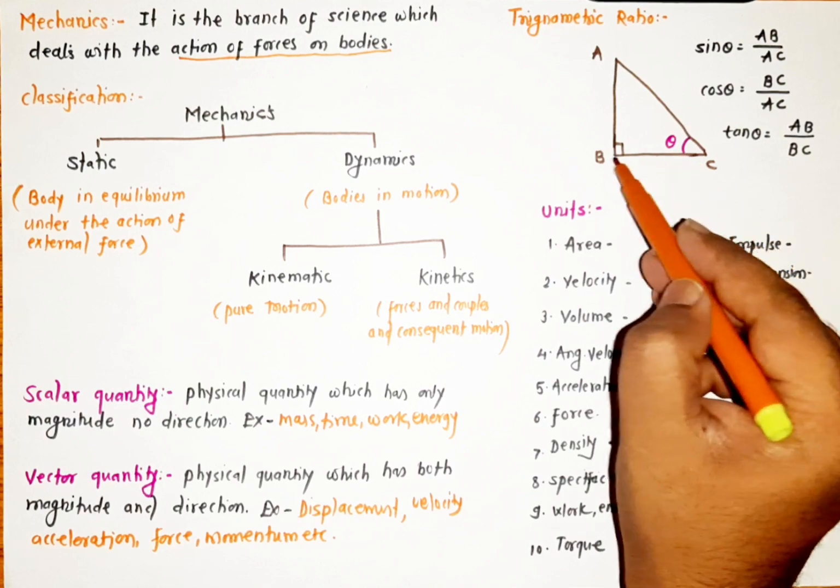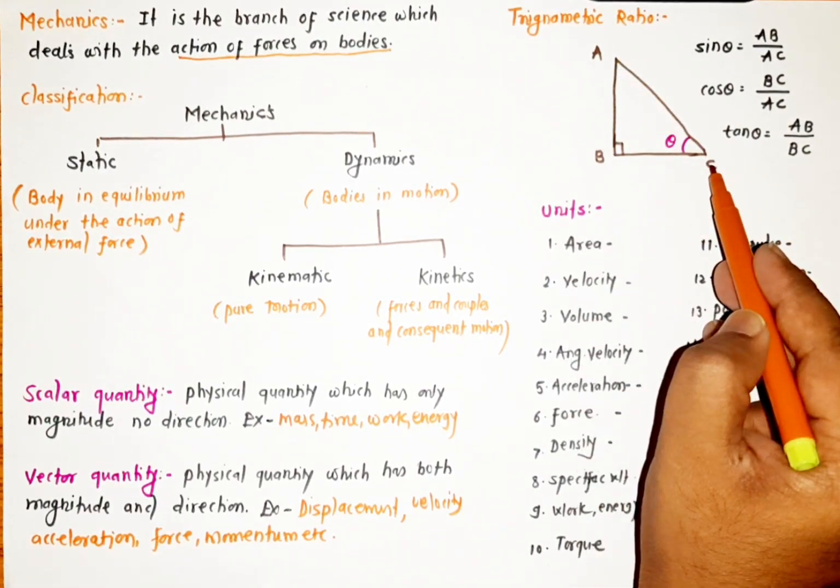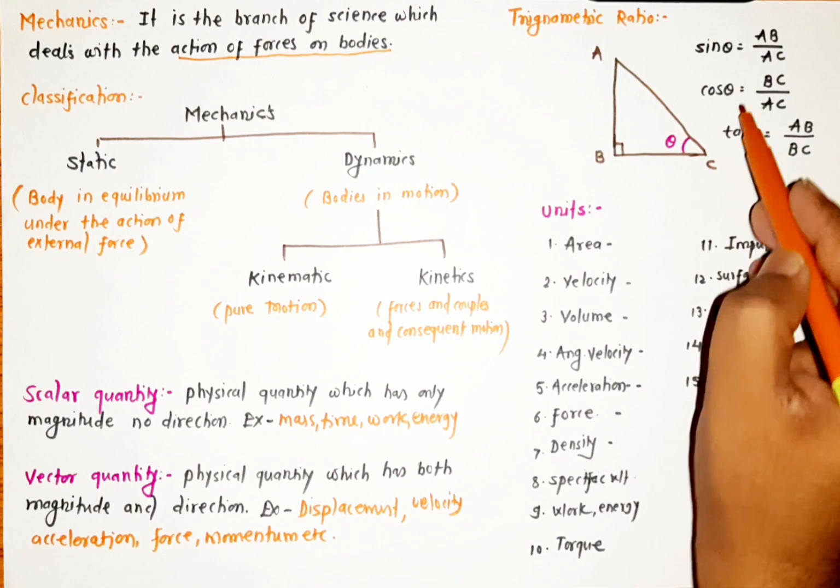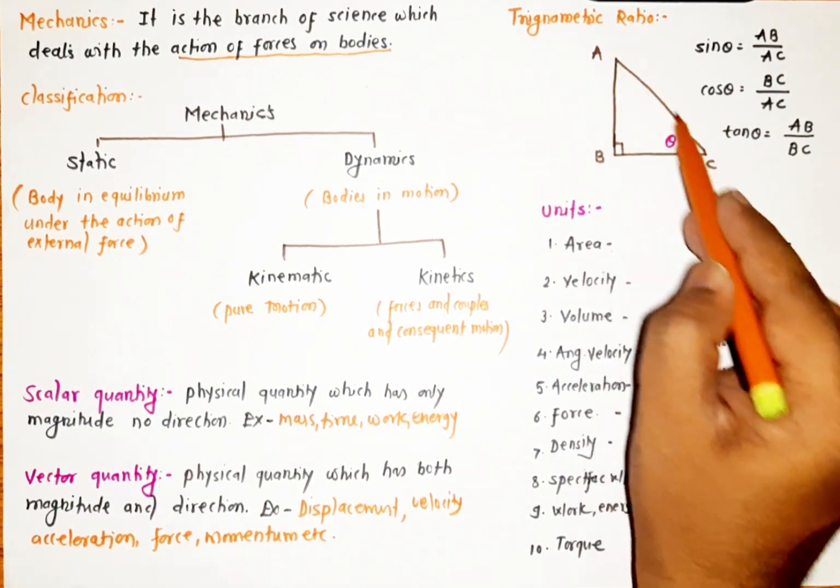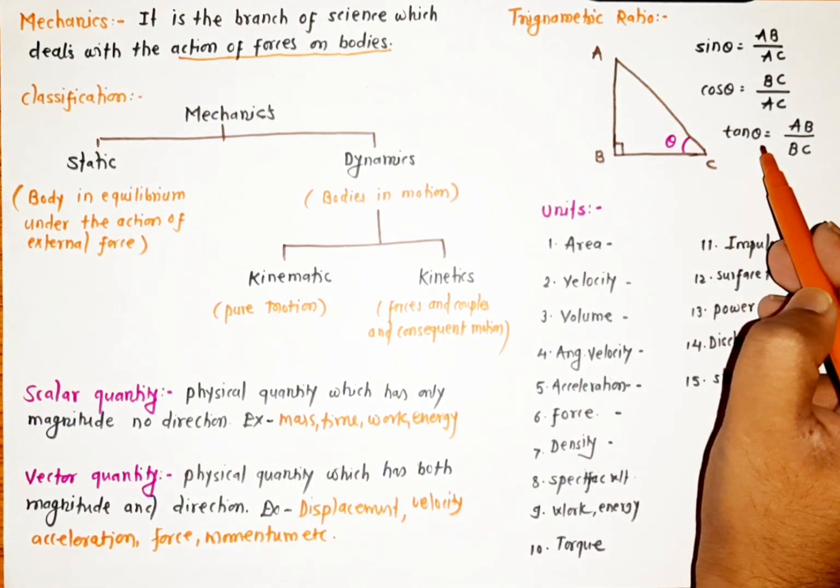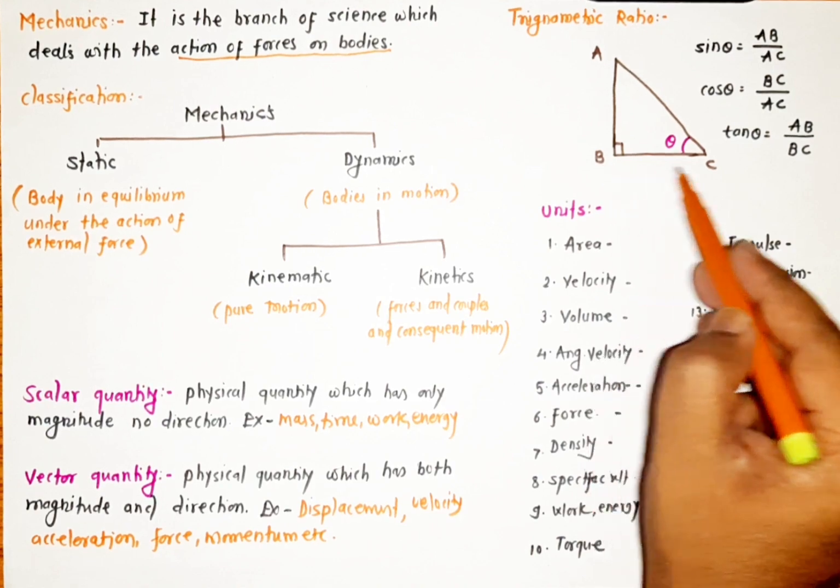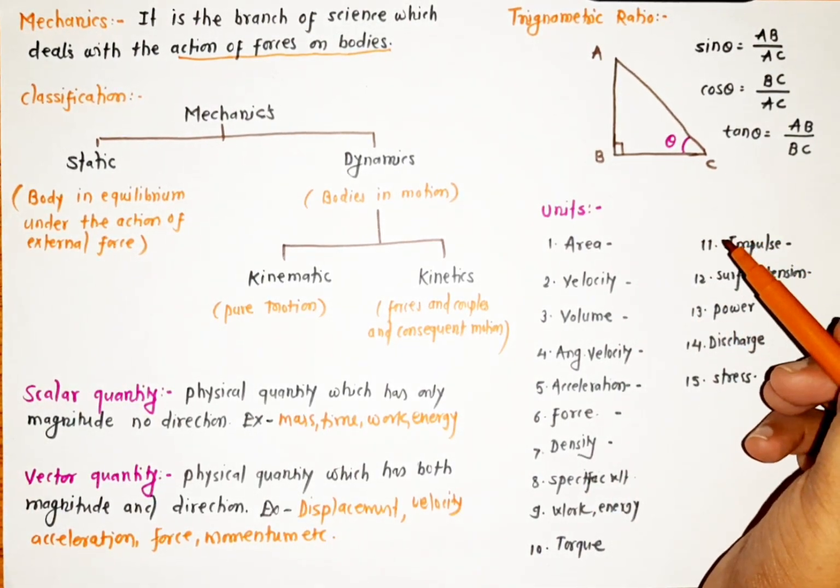Sin theta is equal to AB upon AC, cos theta is equal to BC upon AC, and tan theta is equal to AB upon BC. So this is all about trigonometric ratios, which are important when solving problems.